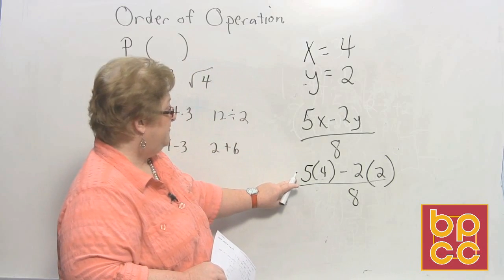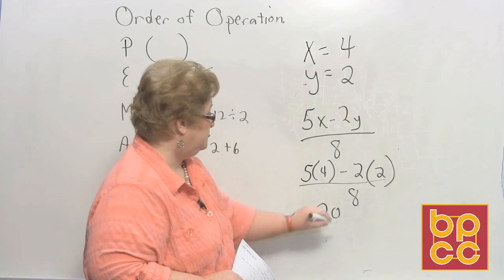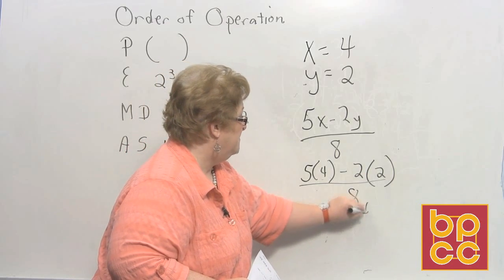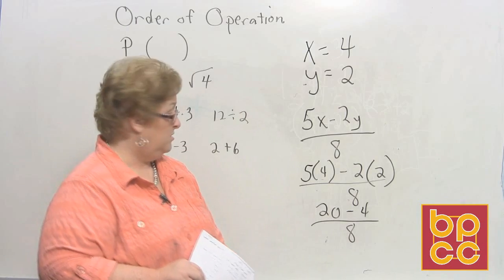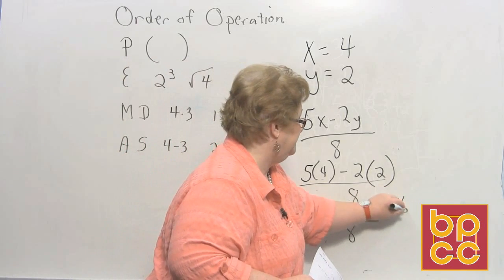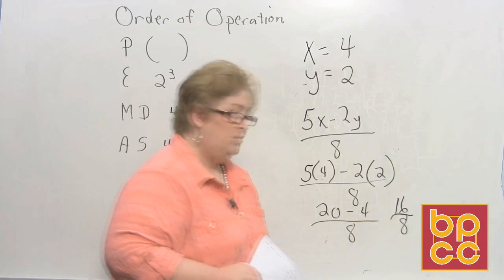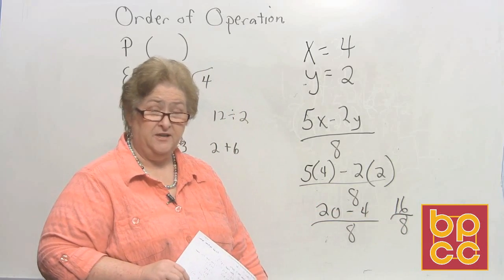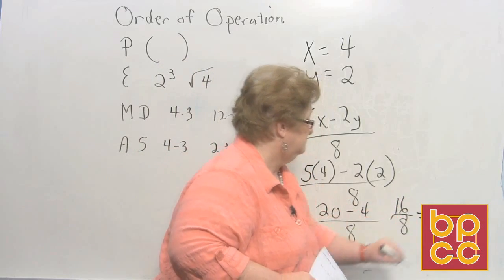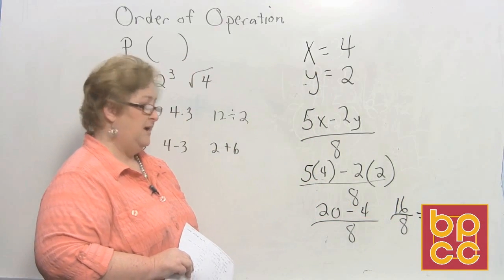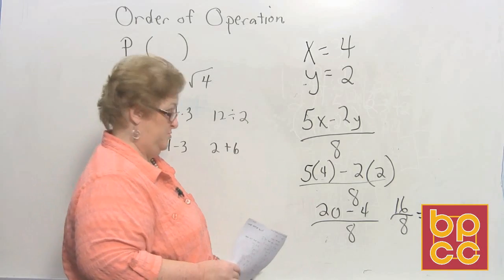Now let's see. 5 times 4 is 20. And 2 times 2 is 4. So that's 20 minus 4 over 8. And 20 minus 4 is 16. And that leaves us with 16 over 8, which we can reduce because it is an improper fraction to the whole number 2. So how'd that go? Pretty good at subbing in? All right. Well, let's try a little more difficult one then.